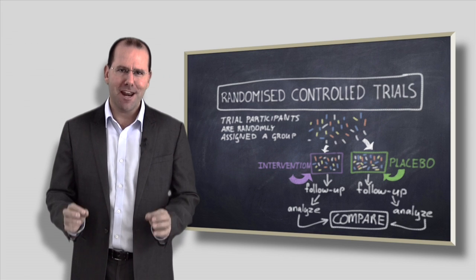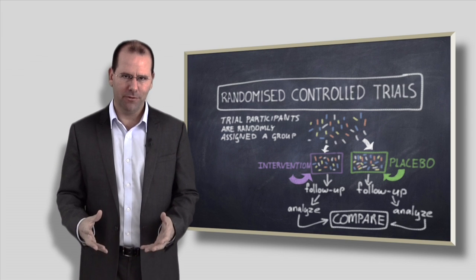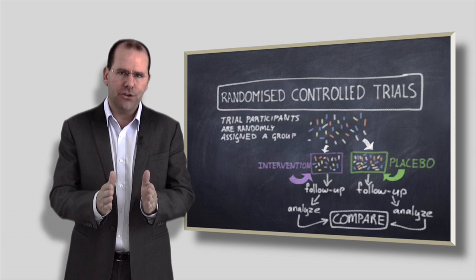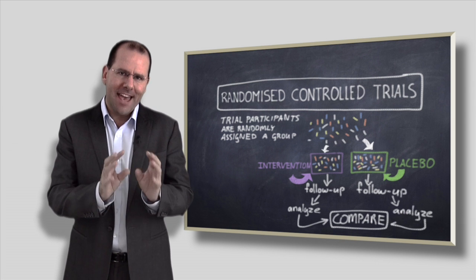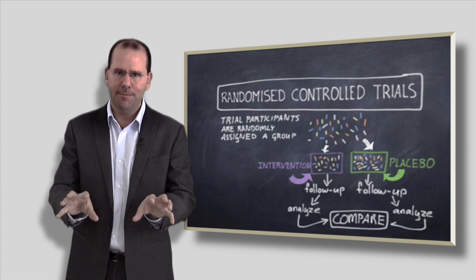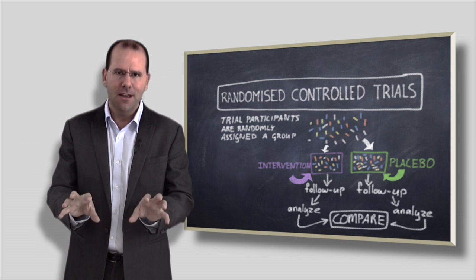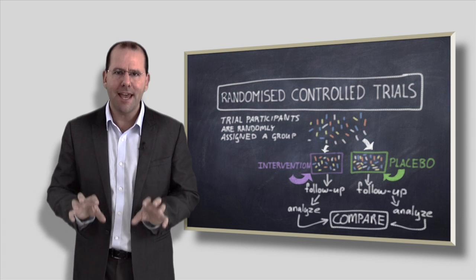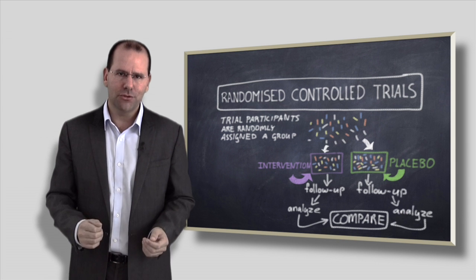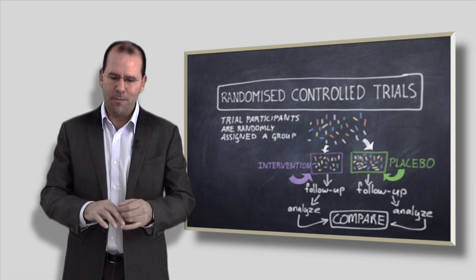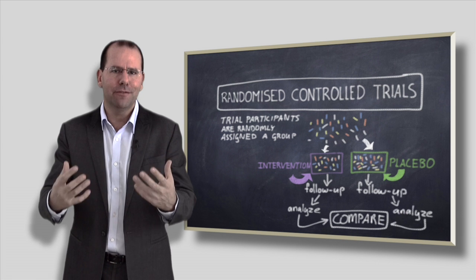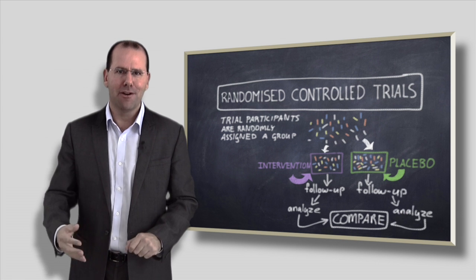So the reason that randomized control trials are so good at dealing with this problem of confounding is that if you've got some sort of variable that would skew the relationship between an exposure and an outcome, but that variable is equally distributed in the two groups that you're considering, so that the intervention group and the placebo group are both equally affected by that confounding variable, then when you compare the two groups the effect of that confounding variable is nullified. And the beauty of a randomized control trial is you don't need to know what the confounding variable is, because the two groups are equal in every way that we can imagine—confounding variables that we haven't even been able to envision are controlled for automatically in a randomized control trial.